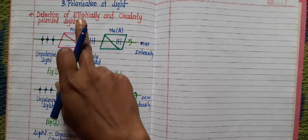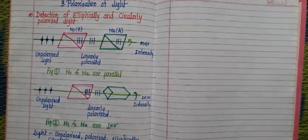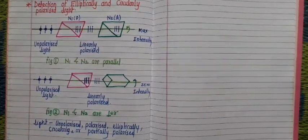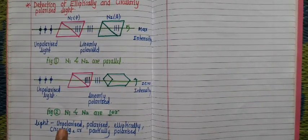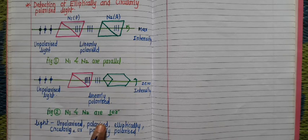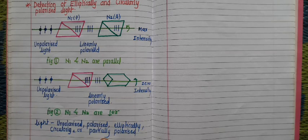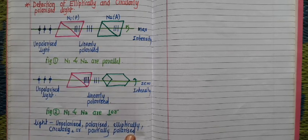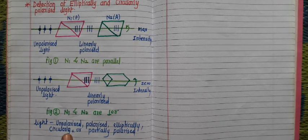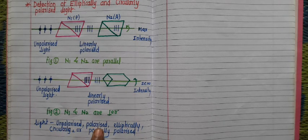After studying this chapter on polarization of light, if we consider a ray of light, that light may be unpolarized, polarized, elliptically polarized, circularly polarized, or partially polarized. But by using the unaided eye, we cannot distinguish between these types: unpolarized, polarized, elliptically polarized, circularly polarized, or partially polarized.